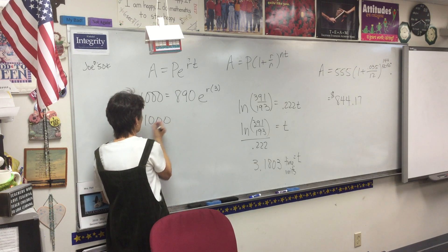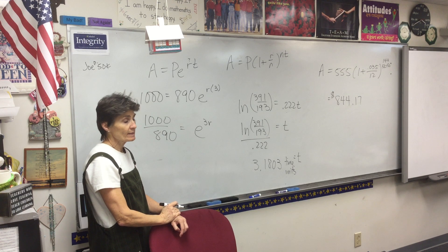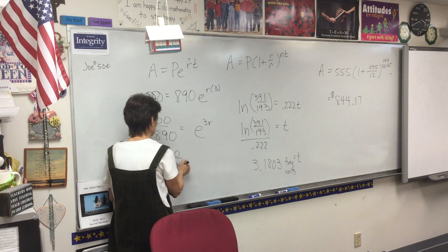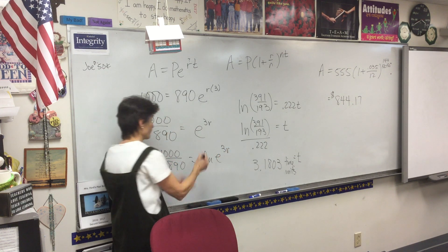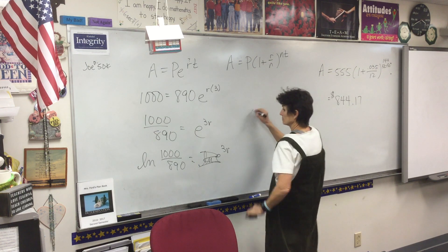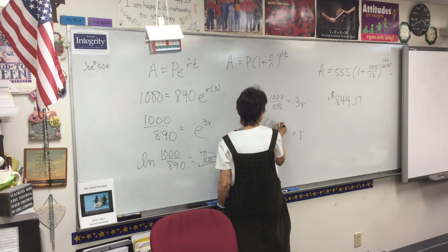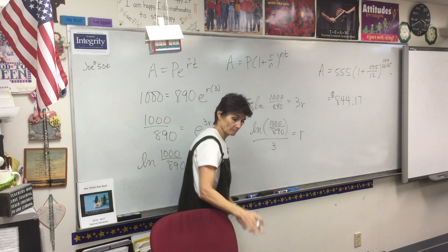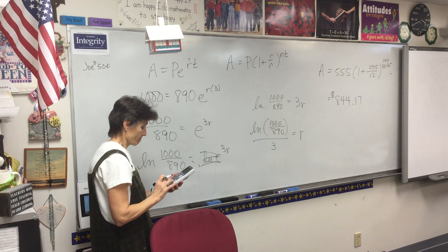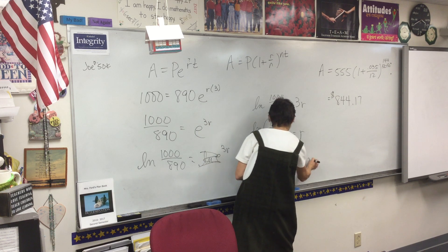Divide by $890 — and unless it goes in evenly, please do not round off some wacky decimal, just leave it as a fraction. Take LN of both sides; and magically, wonderfully, we just take LN of that big fraction and divide it by three. Did you get an interest rate of 0.0388 or 3.88%?